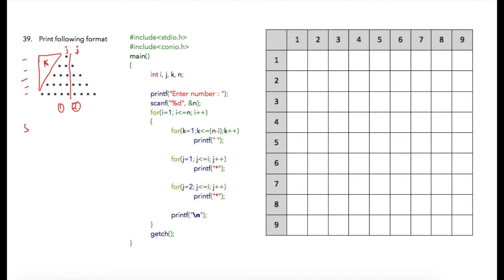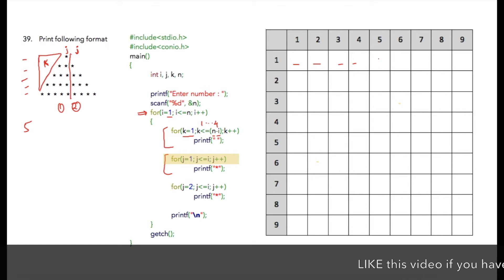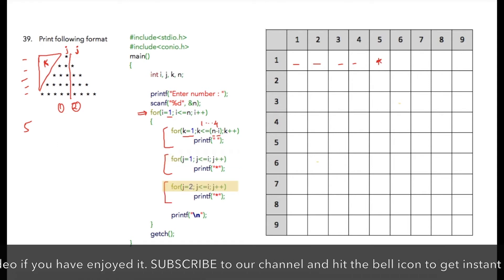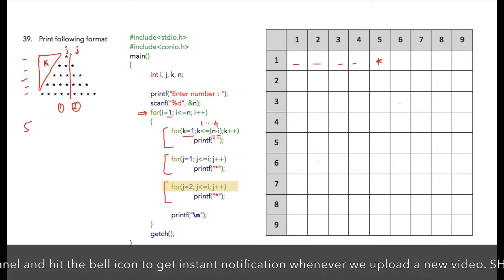Suppose the user has entered five as the row count. The first for loop runs for five iterations, starting from one till five. In the next for loop, k is equal to one and k less than or equal to n minus i. If the user entered five, then five minus i, which is one, gives four — so four spaces will be printed. Then j is initialized to one and the condition is j less than or equal to one, so the loop executes once and a single star is printed.